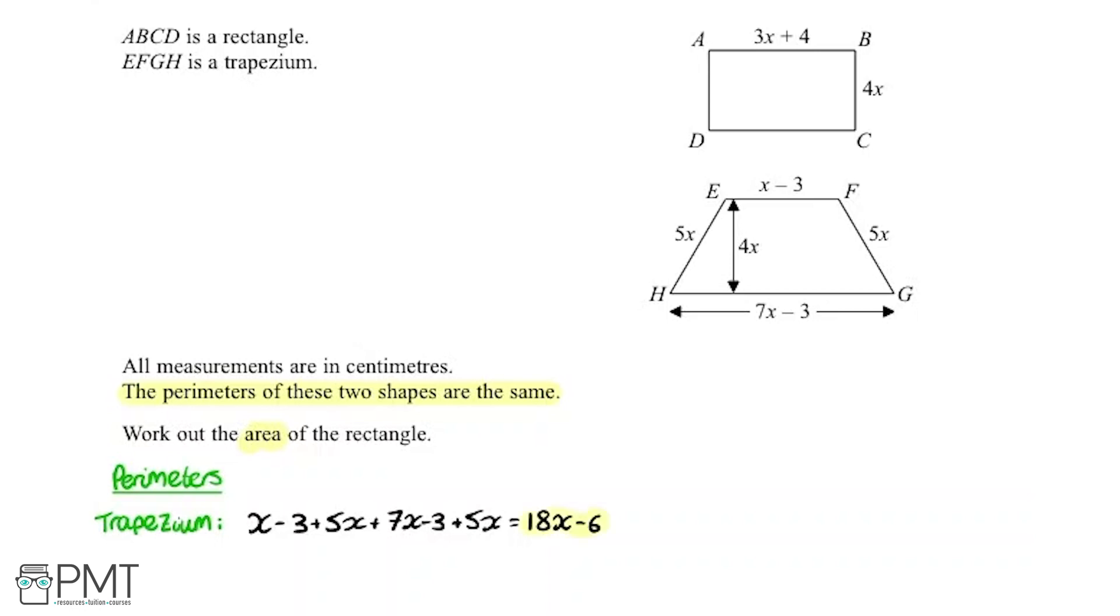Now we're going to move on to the rectangle. Looking at the diagram we can see that we don't actually have a length for these two sides. Using the properties of a rectangle we know that this length is the same as this and this length is the same as this. So I can write those on now. That side is 4x and this is 3x plus 4. So we've got all the information we need to work out the perimeter.